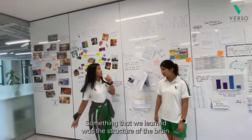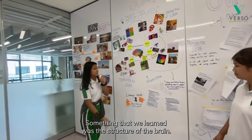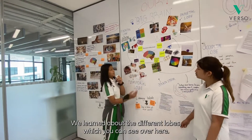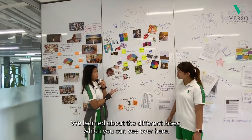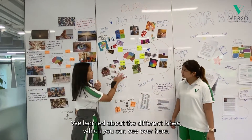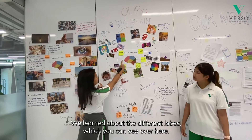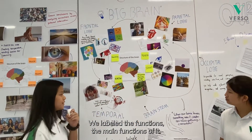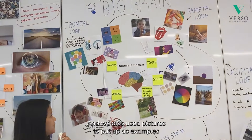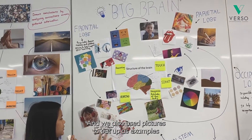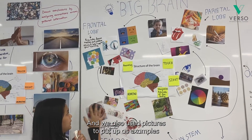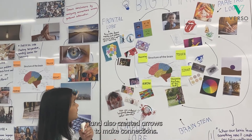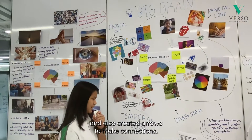Something that we learned was the structure of the brain. We learned about the different lobes, which you can see over here. We labeled the main functions of it, and we also used pictures to put up as examples and created arrows to make connections.